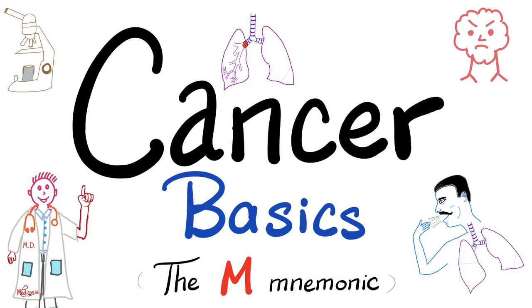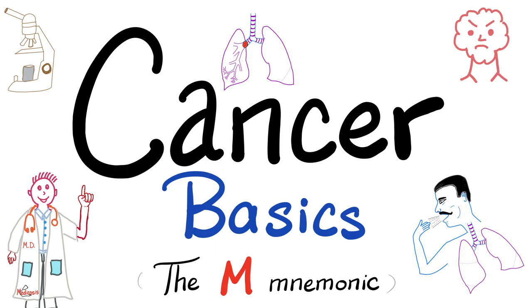Before watching this video, please refer to my previous video titled Cancer Basics, an introduction to oncology. What is growth? You grow as an embryo — that's normal. When tissues get injured, they grow — it's called healing and regeneration. Growth could also be a neoplasia, or something similar to neoplasia, like a hematoma.